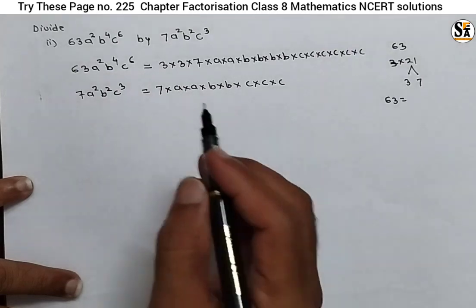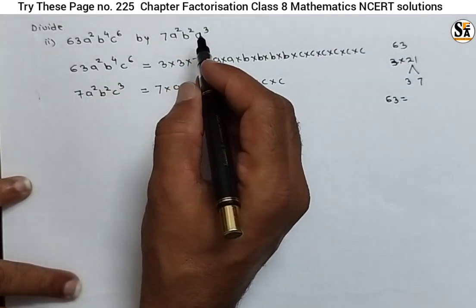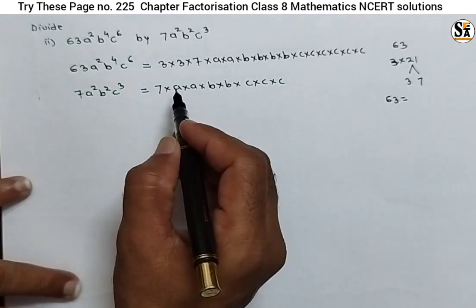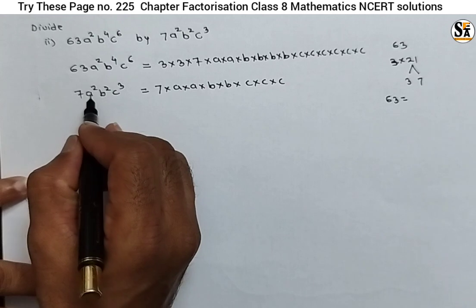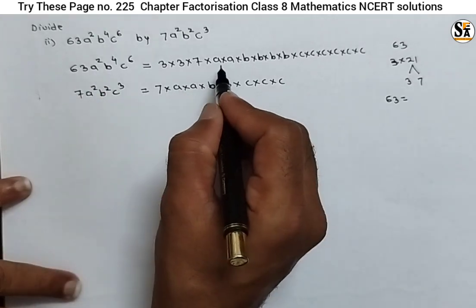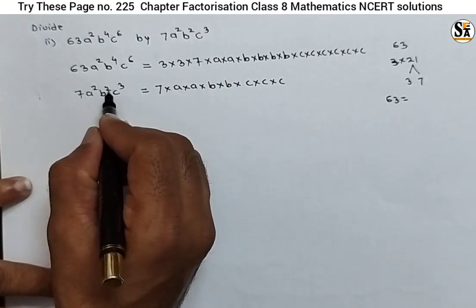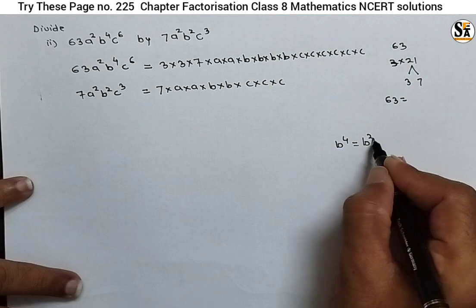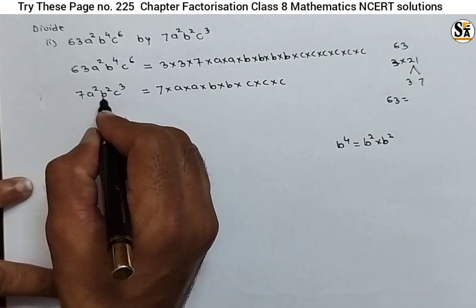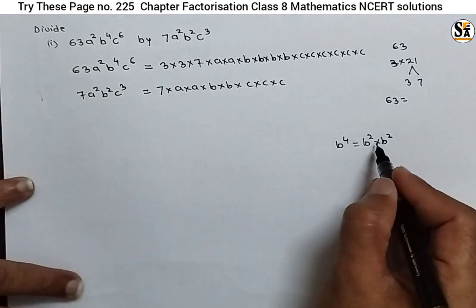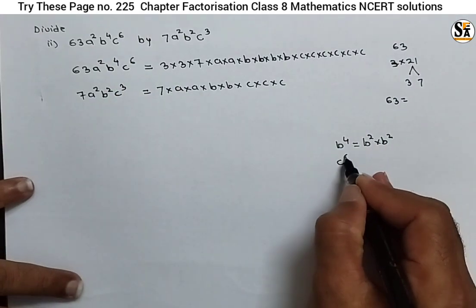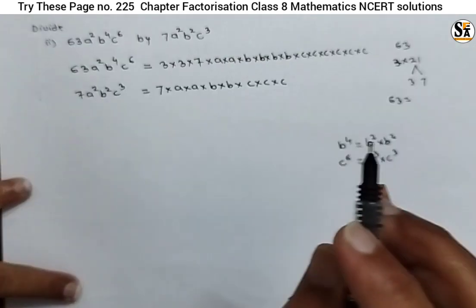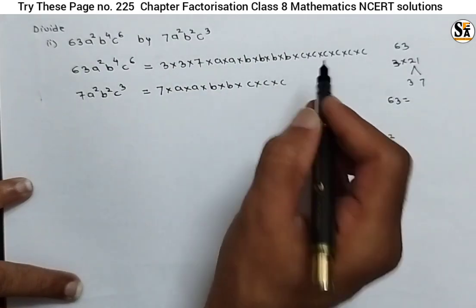Now we are taking the division of these two expressions. It is not necessary to make all the prime factors — just see which we can take as common in the numerator and denominator. For instance, a² is common in both; b⁴ can be written as b²×b² with one b² in the denominator; and c⁶ can be written as c³×c³ since there is c³ in both. We have made all the basic factors.